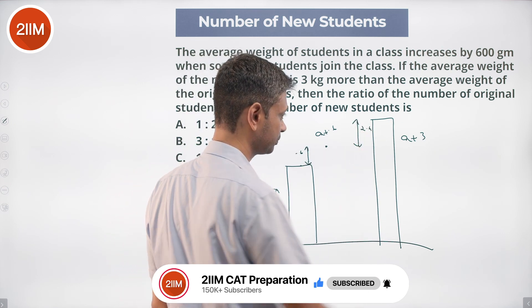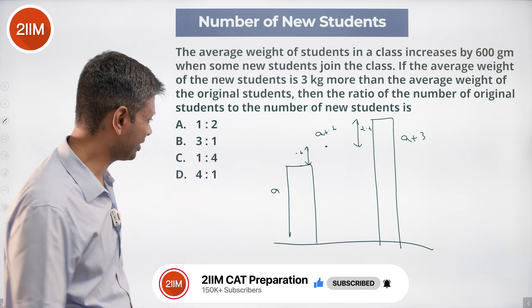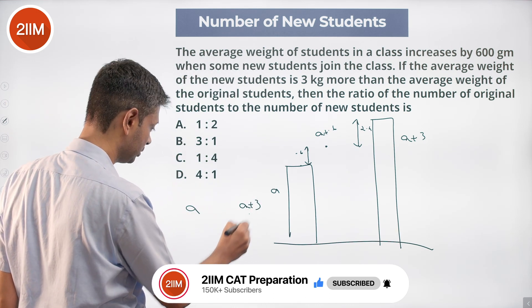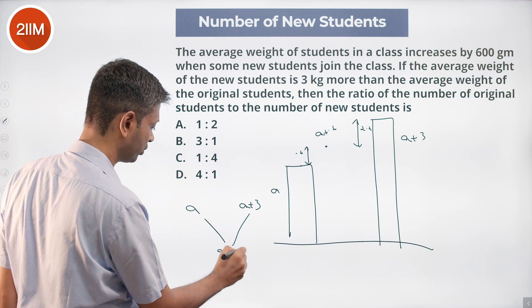2.4. Like mixtures and alligations, mix a and a plus 3 to get a plus 0.6. We should...